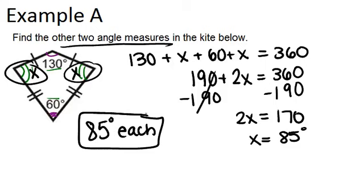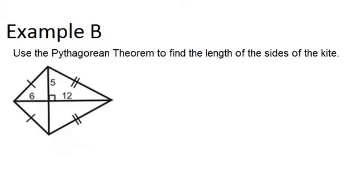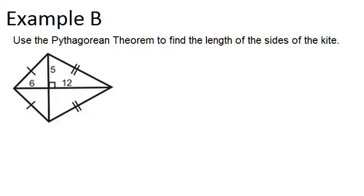Okay, let's look at example B. Use the Pythagorean theorem to find the length of the sides of the kite.